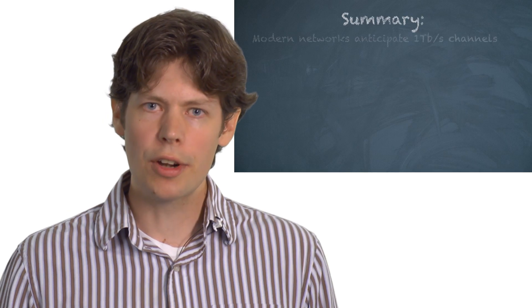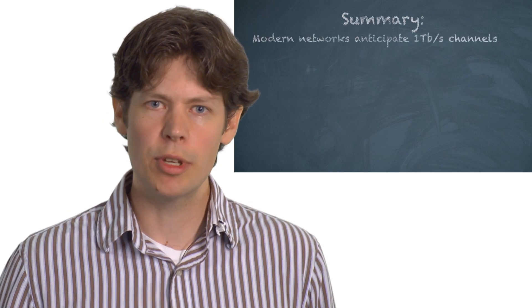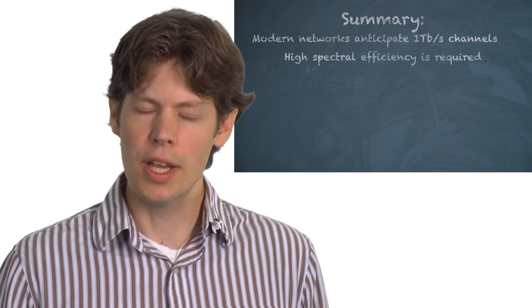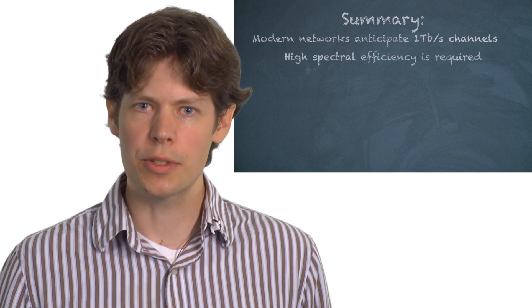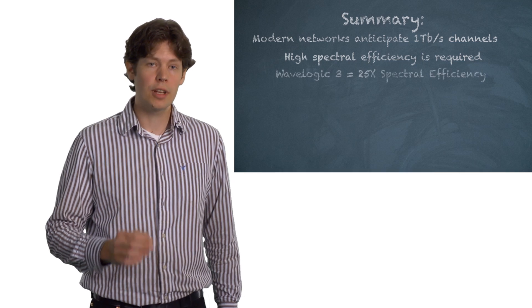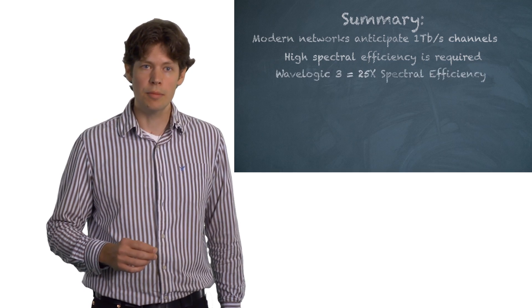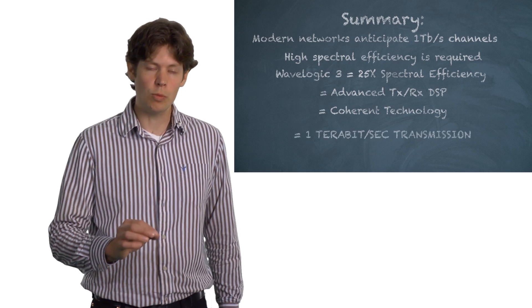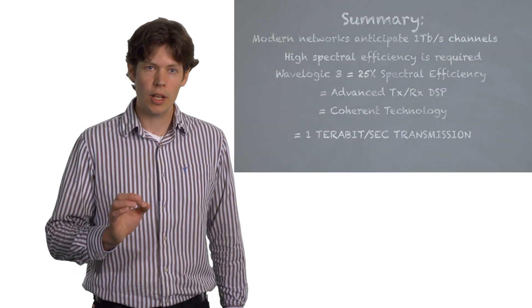So in summary, modern networks anticipate a one terabit per second channel capacity, and this requires a high spectral efficiency to put more bits in the available signal spectrum. With Siena's WaveLogic 3, we've achieved a 25-fold increase in the spectral efficiency, and this is done using advanced digital signal processing in both the transmitter and the receiver, making one terabit per second transmission a reality. WaveLogic 3, it's building networks that change the way you compete.